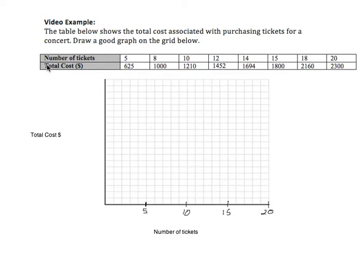Now the total cost data, the first value is 625. So I don't want to have a whole bunch of dead space here and then start piling in values way up here. So what I'm going to do is I'm going to run my vertical from 500 to 2,500. So that's a distance of 2,000 because my largest output or total cost is 2,300.